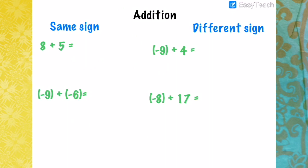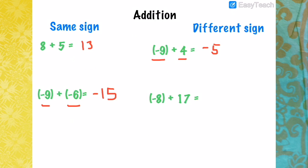In addition, the rule is: if you have the same sign, you add the numbers and copy the sign. For example, 8 plus 5 is 13; since both are positive, the answer is positive 13. Another example: negative 9 plus negative 6 — you add since they have the same sign, that gives 15, and since both are negative, the answer is negative 15. If you have different signs, you subtract and copy the sign of the bigger value. For example, negative 9 plus 4: subtract 4 from 9, giving 5, and since 9 is the bigger value, the answer is negative 5.